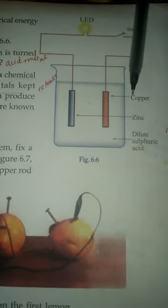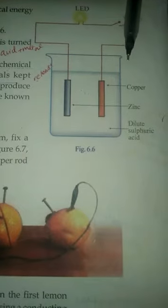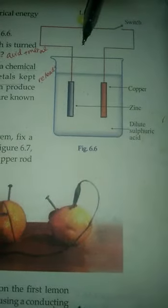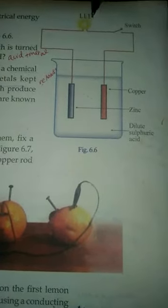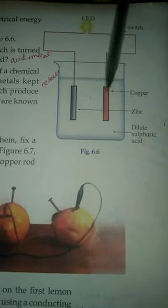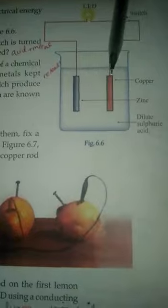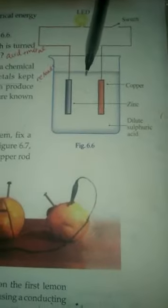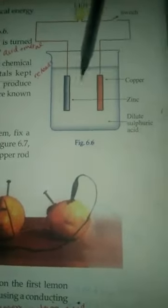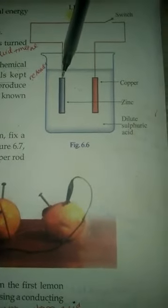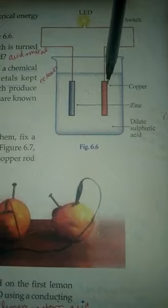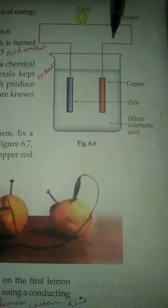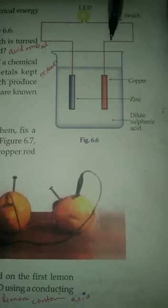So this is one of the electrochemical reactions - that means electricity is produced. Such arrangements which produce electricity as a result of the chemical reaction are known as electrochemical cells. The LED bulb can glow with the use of acid and these metal rods - zinc and copper rods. Here the electricity is produced. Such a type of cells are called electrochemical cells. Okay, thank you.